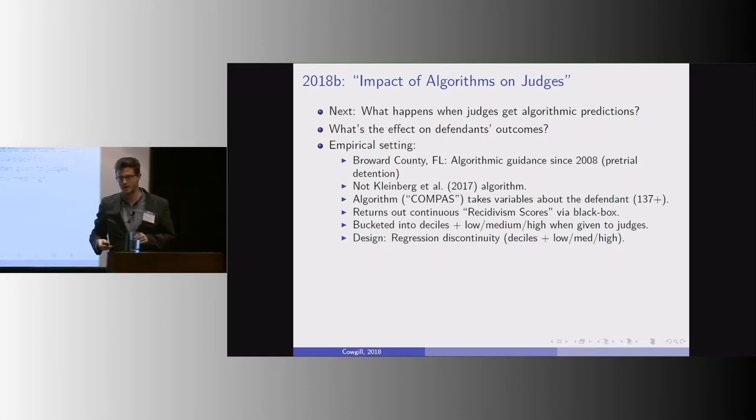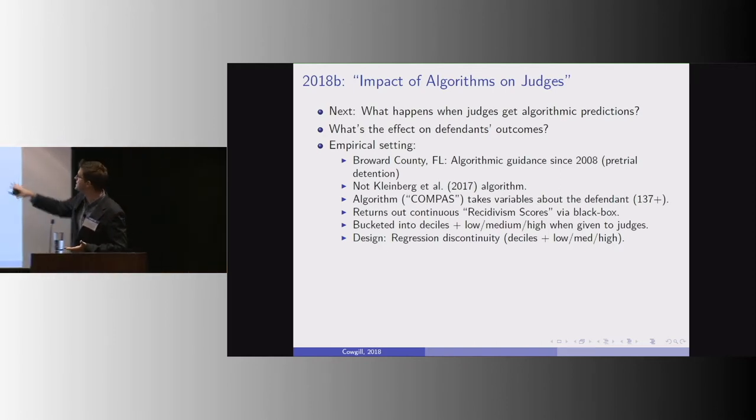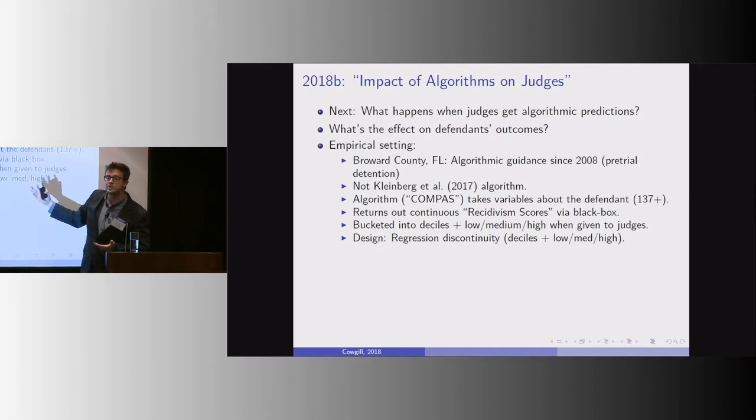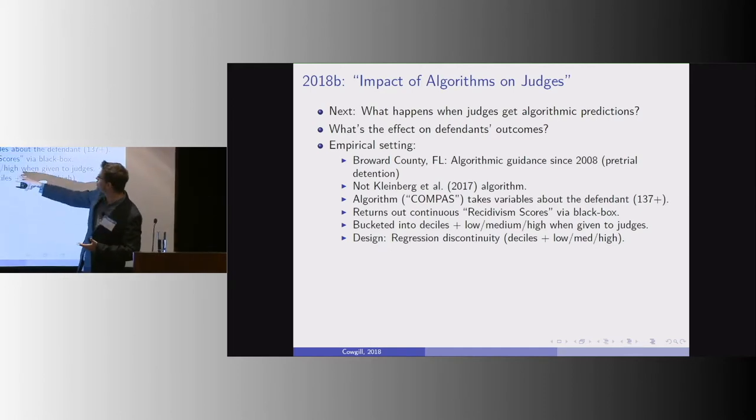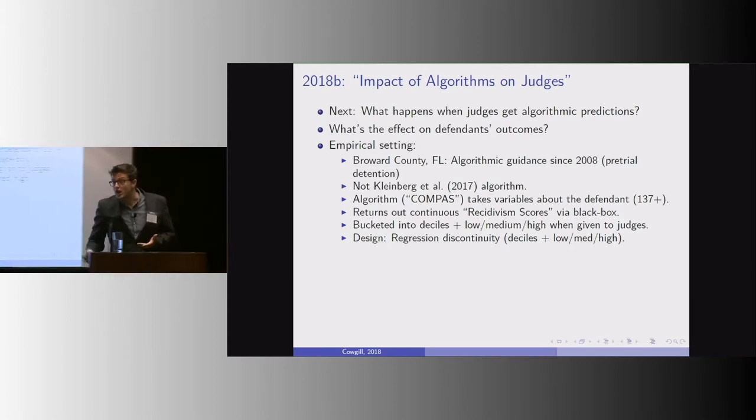But what happens in this setting is there's an algorithm that takes 137 different variables and spits out a continuous recidivism score shown to the judge in buckets of low, medium, high, and also with a decile.